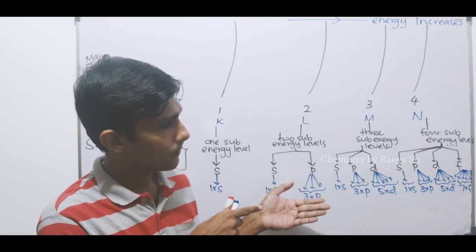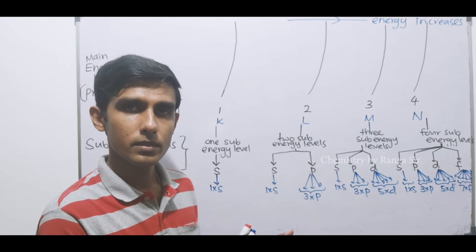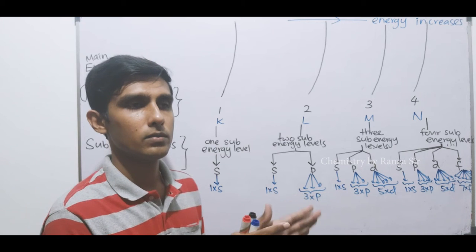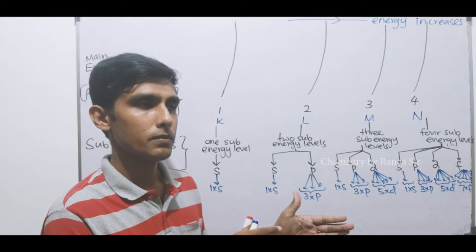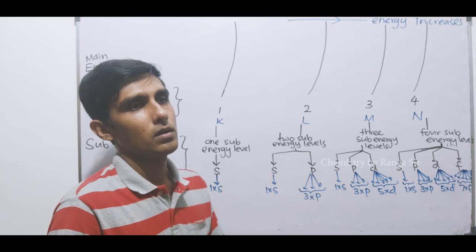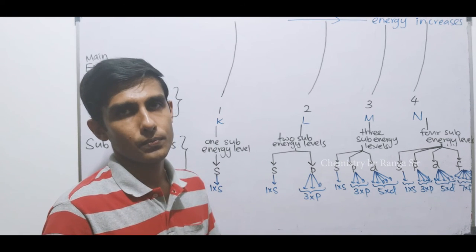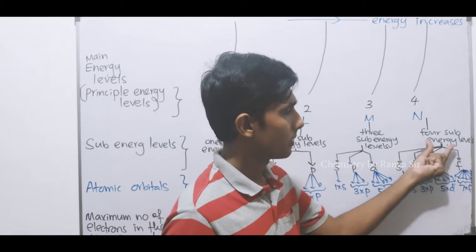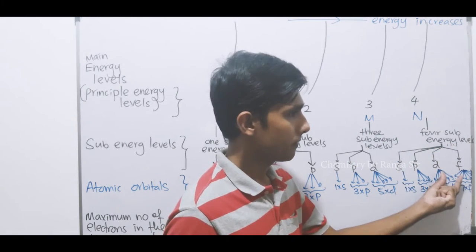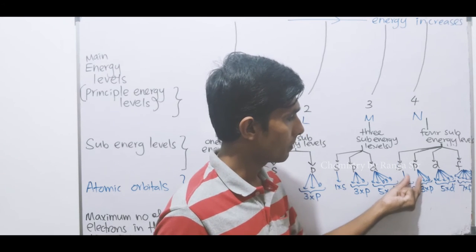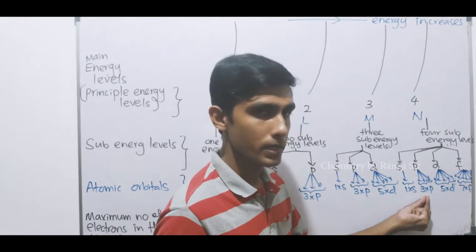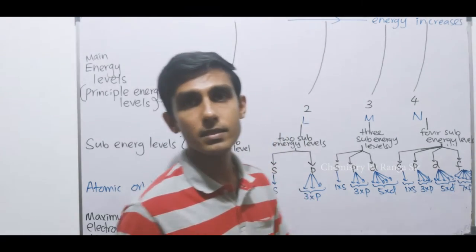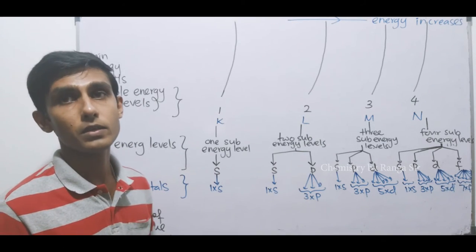I will explain how these things have been derived. The fourth main energy level has four sub energy levels: s, p, d, and f. The s sub energy level has one s orbital, the p sub energy level has three p orbitals, the d sub energy level has five d orbitals, and the f sub energy level has seven f orbitals.